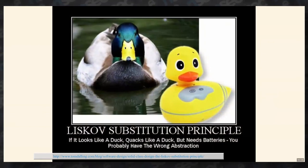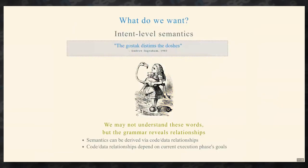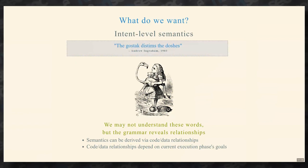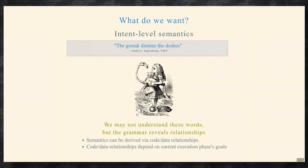If it looks like a duck, quacks like a duck, but needs batteries — you probably have the wrong abstraction. It helps to have the right policy objects for what we're trying to do. What we're going for is intent-level semantics. Here's a sentence: 'The gosh jack dischims the doses' — we may not understand these words, but the grammar reveals relationships. Looking at U-Boot — which is a pretty major large codebase — the semantics of U-Boot can be derived by understanding code and data relationships, which may depend on the bootloader's current execution phase and that phase's goals.